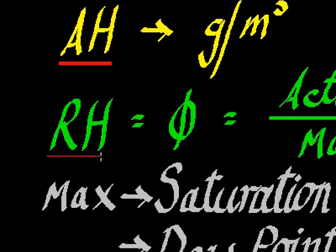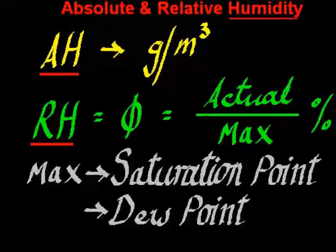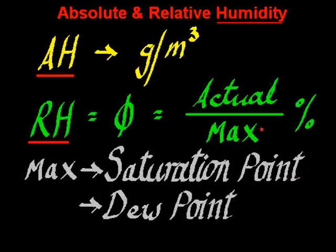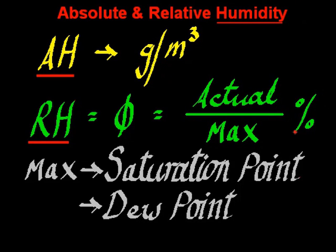Relative humidity is denoted by this symbol here, and is a measure of the actual amount of water in the atmosphere compared with the maximum amount of water that that atmosphere, or parcel of air, can contain at that temperature. And it's measured as a percentage.